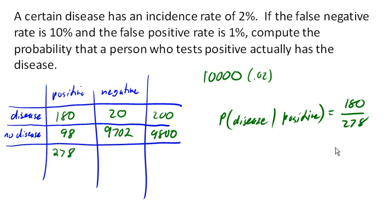And that comes out to be about 64.7%. So about 65% of people who test positive in this case will actually have the disease.